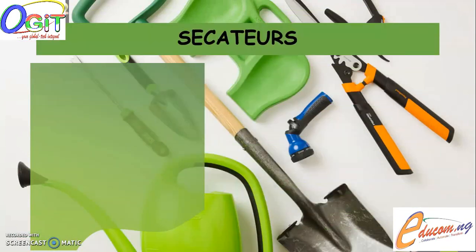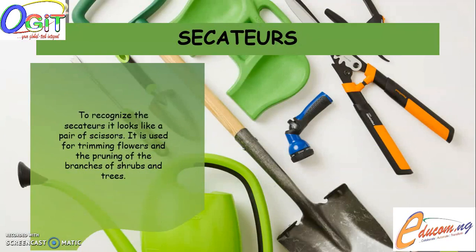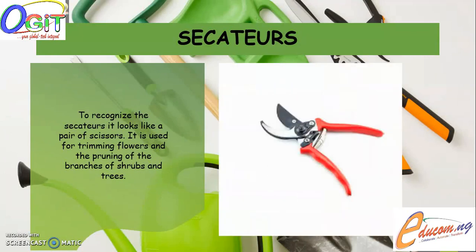The last type of farm tool is what is called secateurs. To recognize the secateurs, it looks like a pair of scissors. It is used for trimming flowers and the pruning of branches of shrubs and trees. The secateurs are made up of two metal blades, of which one has a concave curve while the other has a convex curve, joined together at a point. It has two short metal handles with a spring in between them. You can operate the secateurs with one hand while the plant or branch to be cut is held with the other free hand.